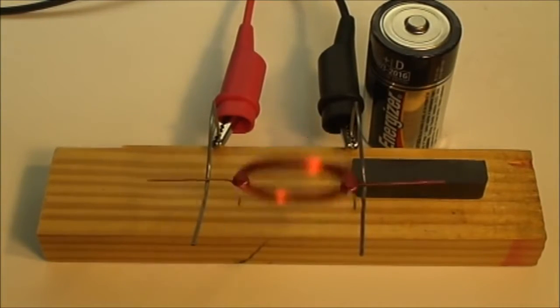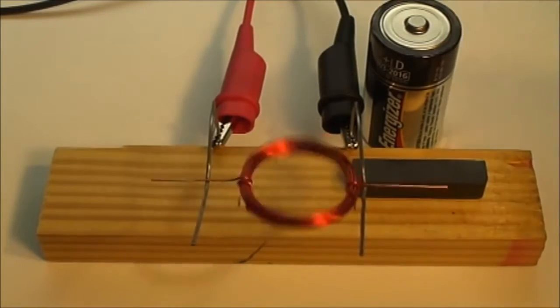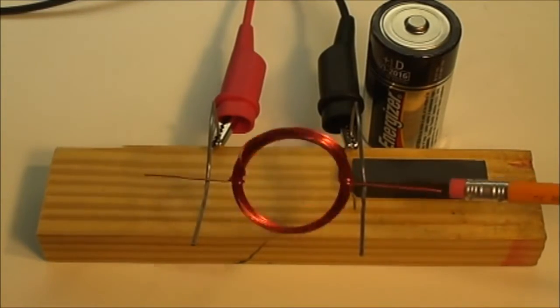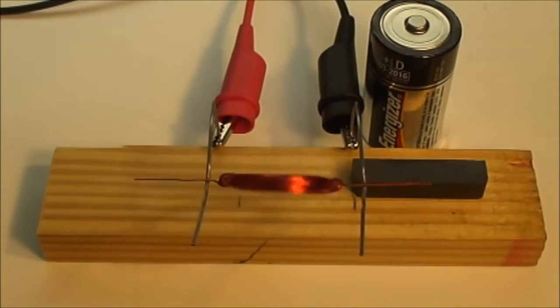There's another factor we can use to change the power of the motor, and that's the voltage being applied. As the voltage across the coil increases, then the power of the magnetism in the coil also increases.